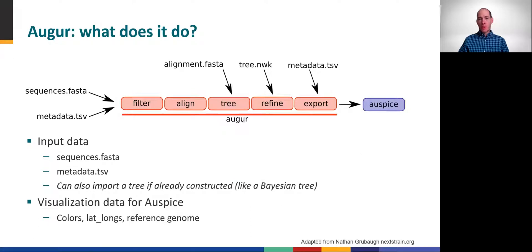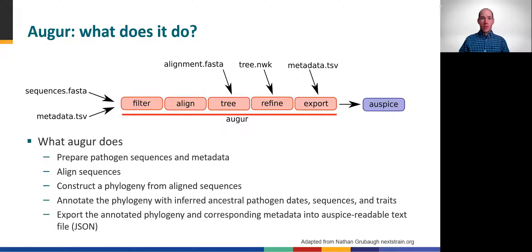Here's a little more detail about what happens inside Augur. The key inputs are actually very simple: a file containing your viral genome sequences in standard FASTA format, and a metadata text file. The basic Augur workflow includes a series of common bioinformatics steps like sequence alignment and phylogenetic tree calculation. Augur further annotates the resulting tree based on the supplied metadata, and generates a detailed visualization file for Auspice using a common text format called JSON. JSON stands for JavaScript Object Notation, and is just a flexible file format widely used for data exchange.